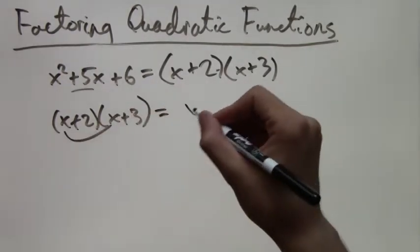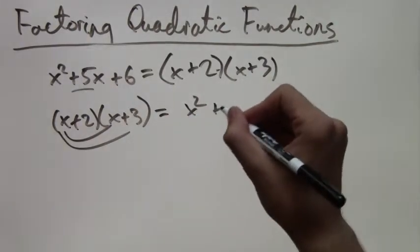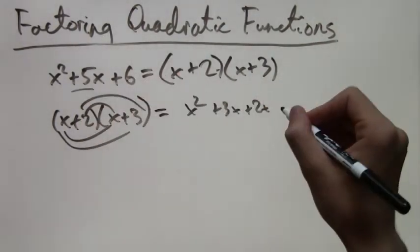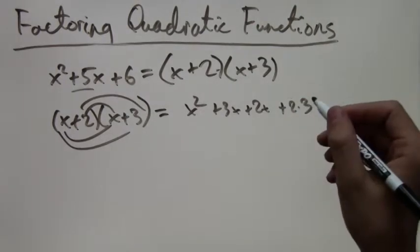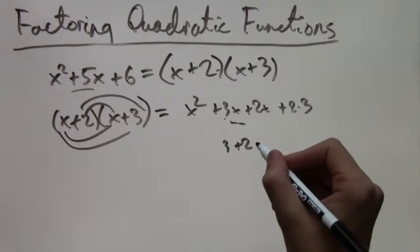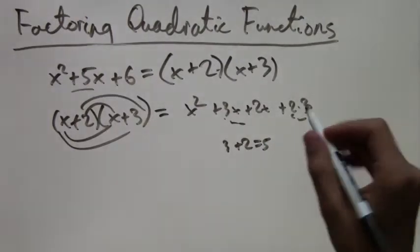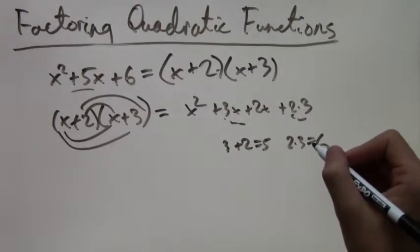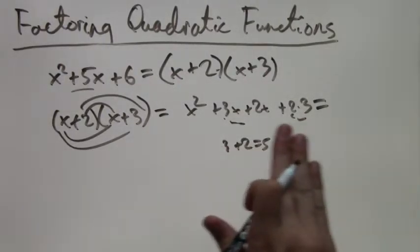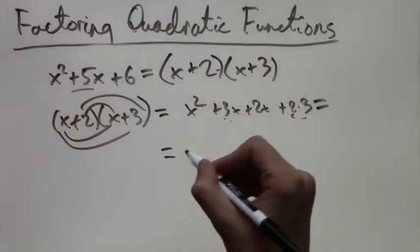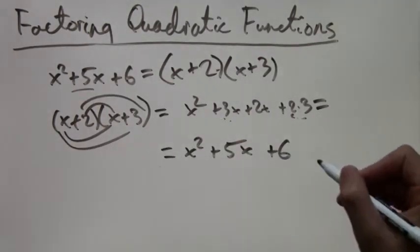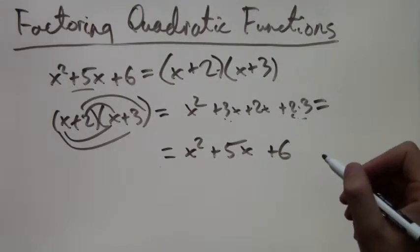If we foil, we get x squared plus 3x plus 2x plus 2 times 3. And see again, we have 2 times 3 and 2 plus 3. That's where the rule comes from. The 3x plus 2x equals 5, and 2 times 3 is just 6. So when we simplify this, we get x squared plus 5x plus 6, which is what we started with. So what we did was correct.